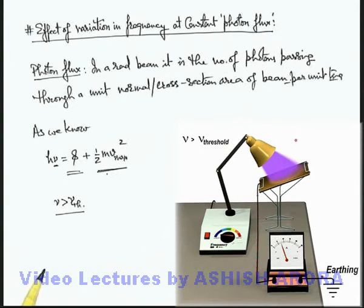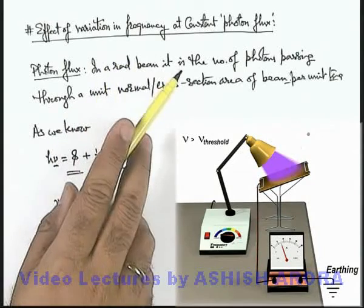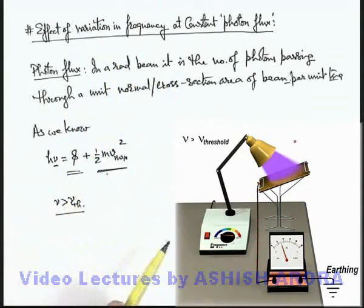The reason for constant current is that the number of electrons ejecting out remains almost the same, whereas their speed changes. And if the total amount of charge which is ejected out per unit time is constant, current will also remain the same. So this is the phenomenon where we can say, on increasing the frequency of incident light, if we are keeping photon flux constant, photo current remains the same.